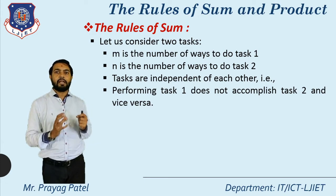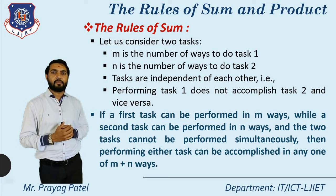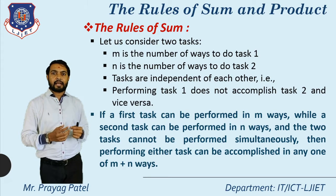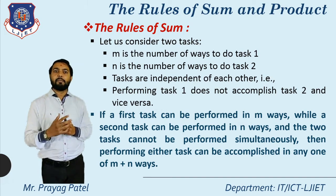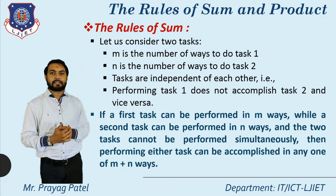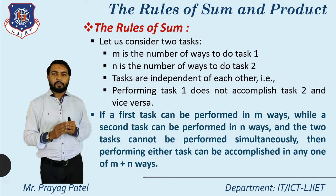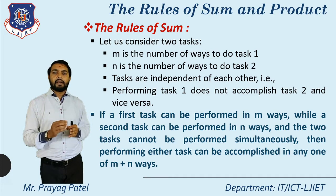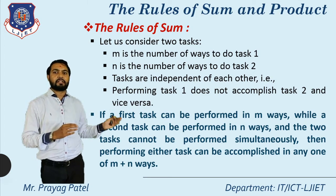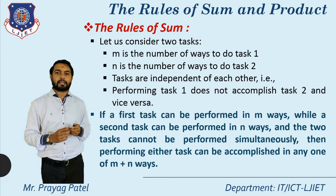Performing task one does not accomplish task two and vice versa — both are independent tasks. The definition of the rule of sum is: if a first task can be performed in m ways and a second task can be performed in n ways, and the two tasks cannot be performed simultaneously, then performing either task one or task two gives m plus n ways. So the total ways possible is equal to m plus n.